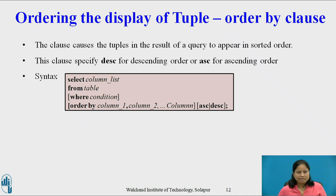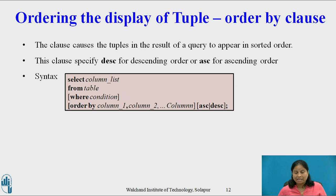Now consider the ordering of the display of tuples using the ORDER BY clause. SQL offers the user some control over the order in which tuples in a relation are displayed. This clause causes the tuples in the result of a query to appear in sorted order. By default, ORDER BY lists items in ascending order. To specify the sort order, we may specify DESC for descending or ASC for ascending. The syntax is: SELECT column_list FROM table WHERE condition ORDER BY column1, column2, ..., column_n [ASC | DESC].